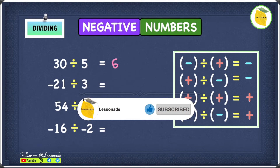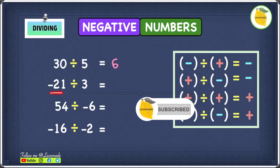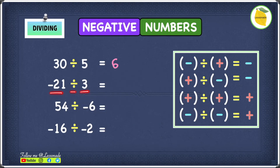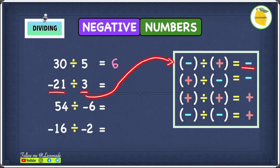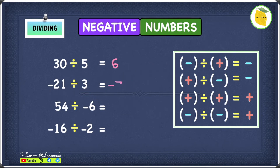The next one is minus 21 divided by 3. In this we have a negative number and a positive. When two of the signs are different — when you have a negative and a positive number — your answer will be negative. So minus 21 divided by 3 will give you an answer of minus 7.